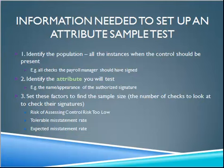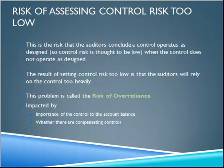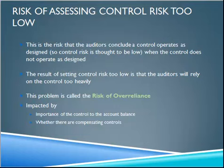The next three slides talk about factors we need to determine sample size for statistical sampling. The biggest question is: how sure do we want to be that our test is right? That's the risk of assessing control risk too low. If I say a control is good — control risk is low — and I'm right, we'll do relatively less testing on the rest of the audit. I'd have to test every item to be 100% sure; if I test none, I'm 0% sure. We pick somewhere between 0 and 100, usually a low chance of getting the answer wrong. In some audits we might go up to 20% because it's a control we don't care about that much.